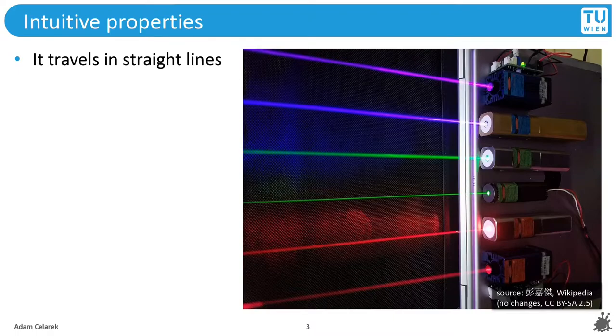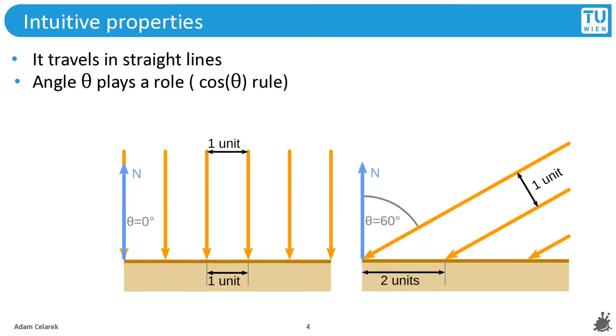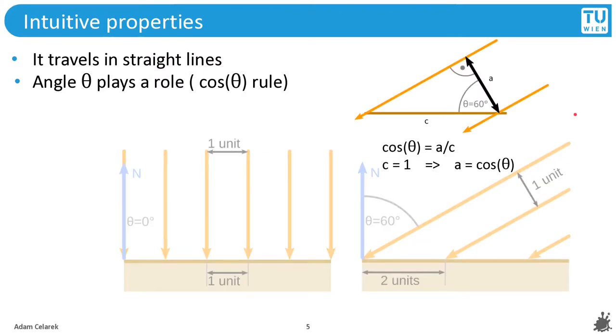The first property is that light travels in straight lines. This is how we can do ray tracing and this is also how we can use lasers to tease cats. Next, the angle theta plays a role. When the light shines on the surface by a right angle, one unit of light reaches one unit of the surface. However, when we tilt the surface or when we tilt the light, one unit arrives on a larger surface area, and so the density of the photons becomes lower.